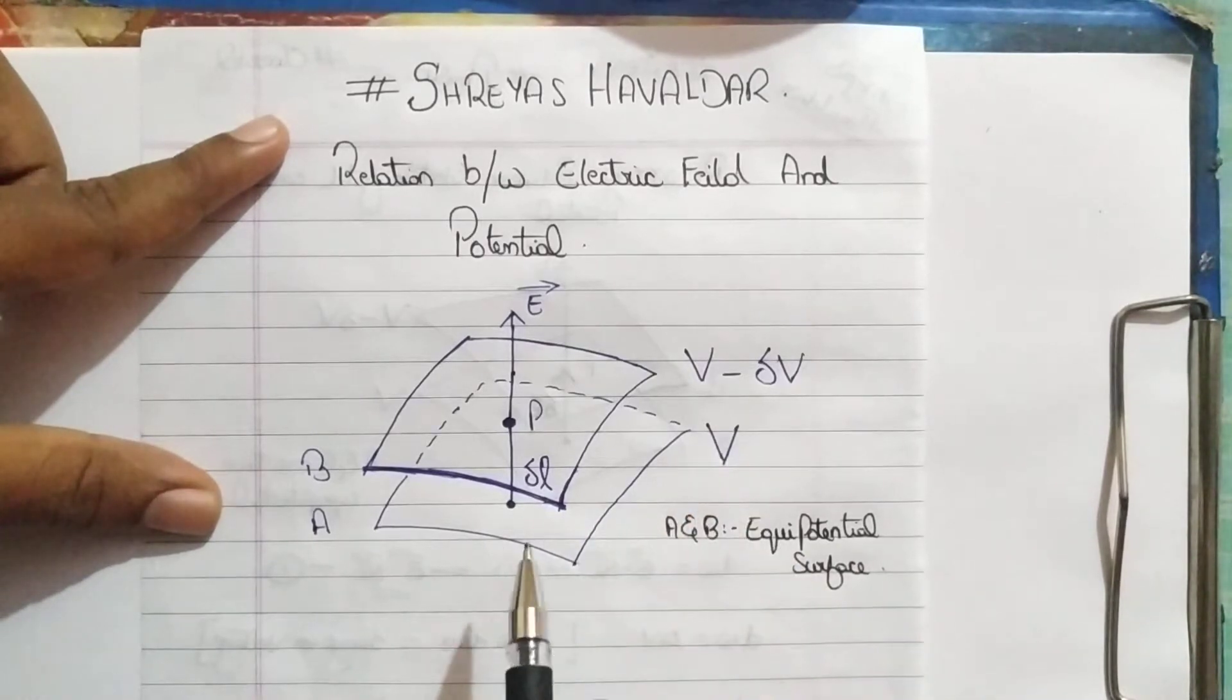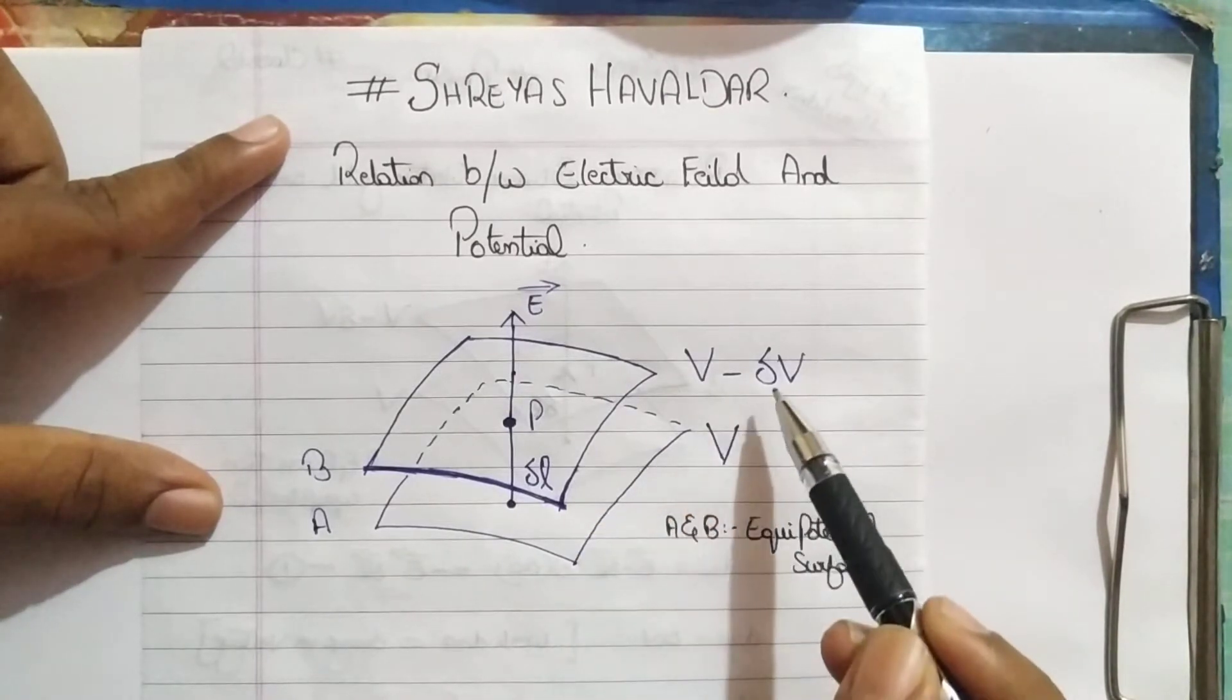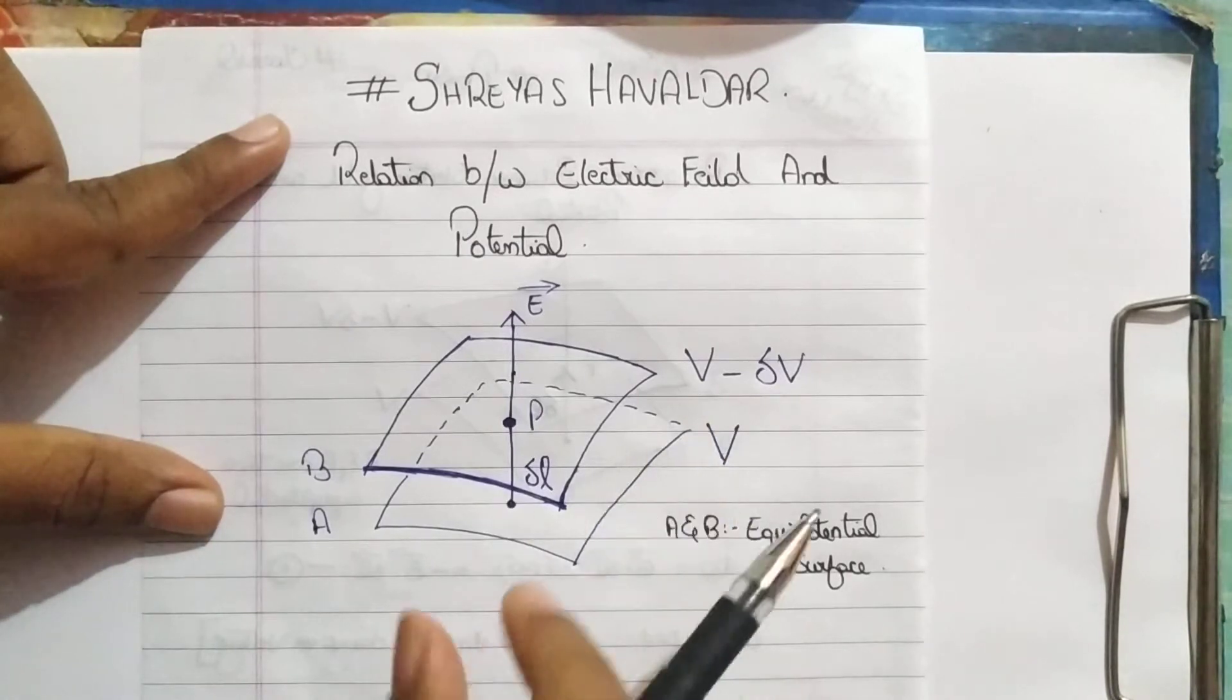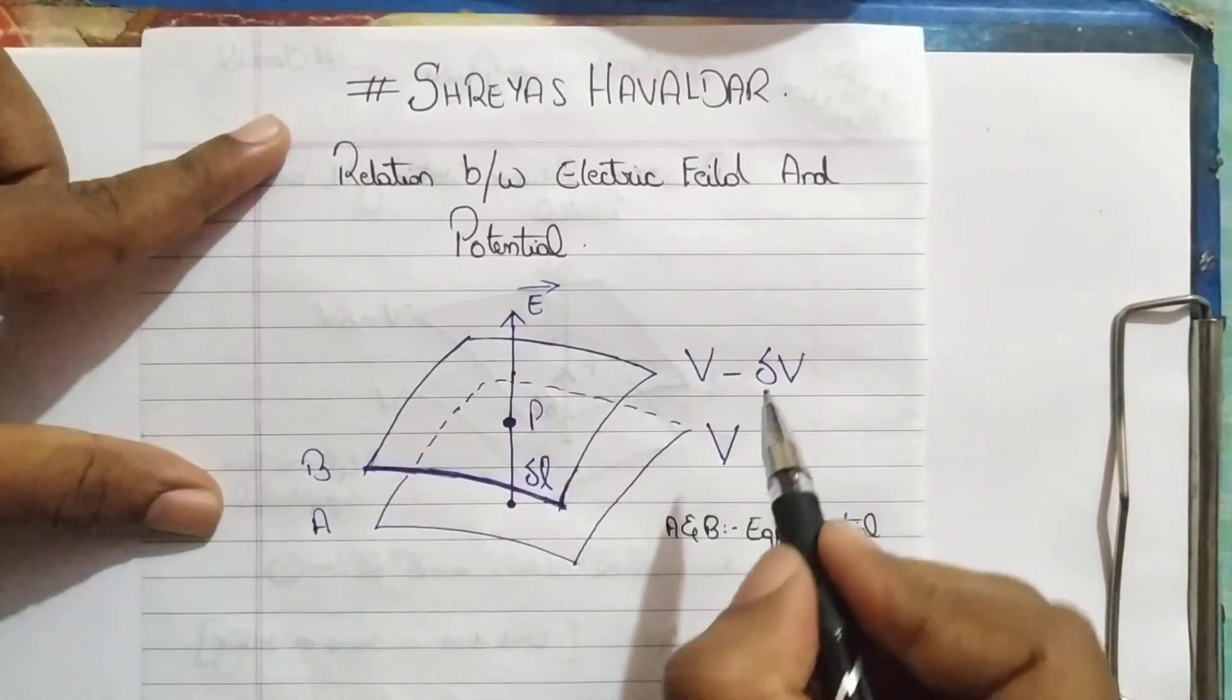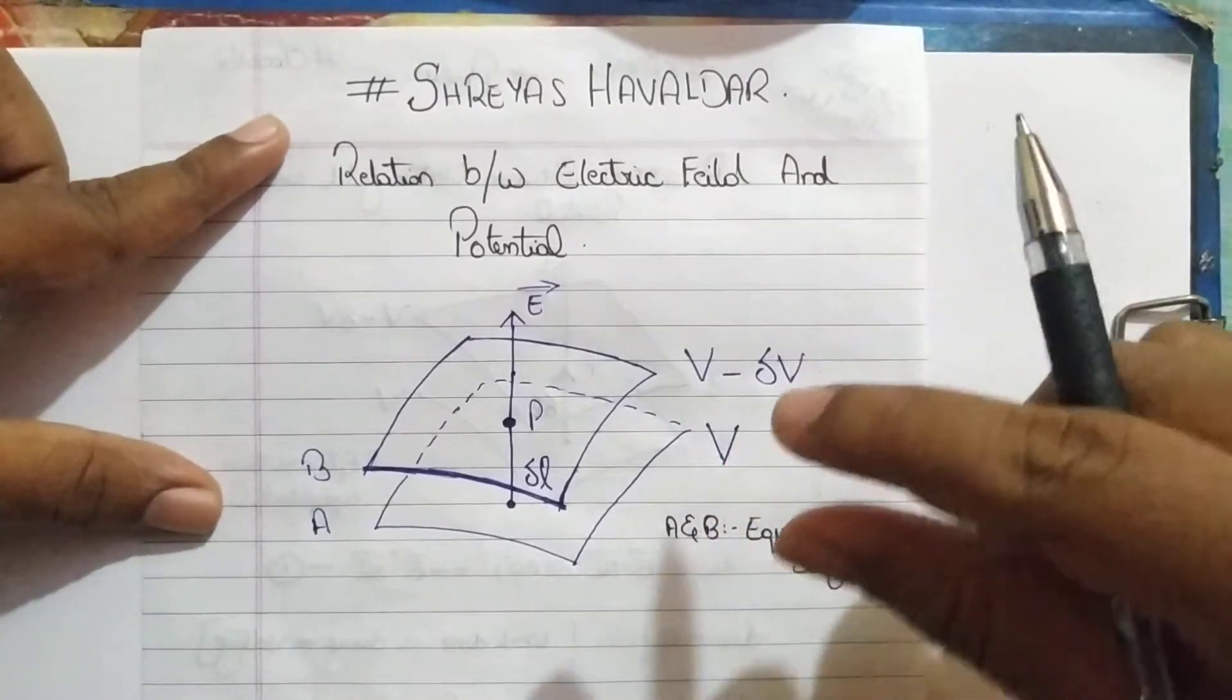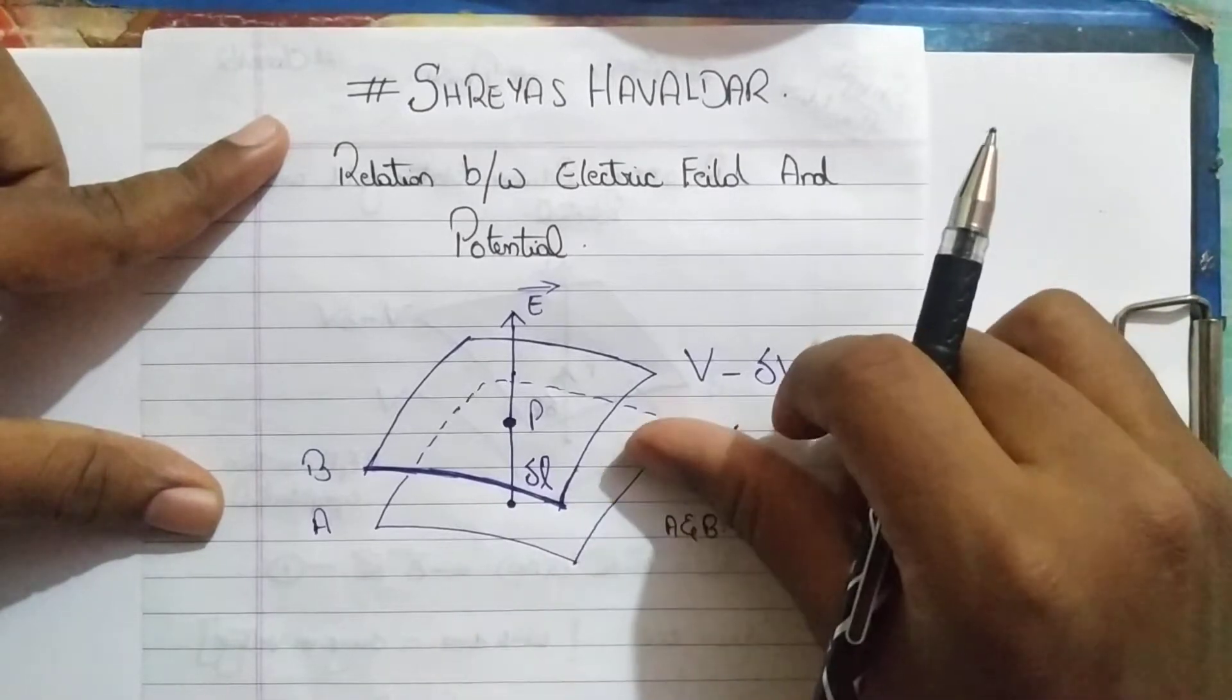We have given voltage V to the equipotential surface A and we have given voltage V minus delta V to B. As you see, we have reduced the voltage in B by the fraction delta V.